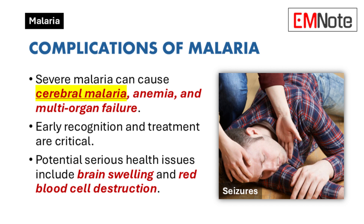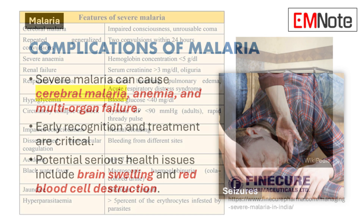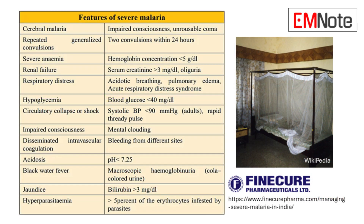Complications of Malaria: Severe malaria can lead to serious health issues such as cerebral malaria, brain swelling, anemia due to red blood cell destruction, and multi-organ failure. Early recognition and treatment are vital to prevent these complications.